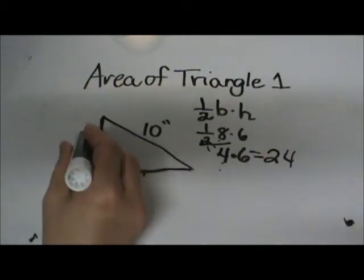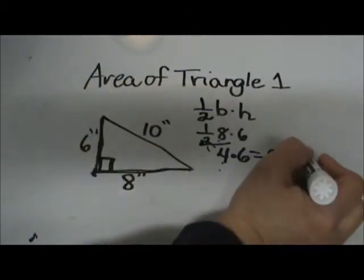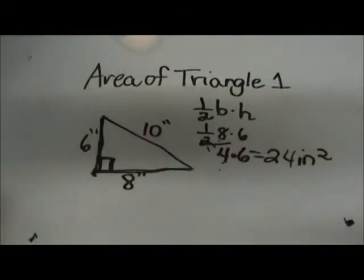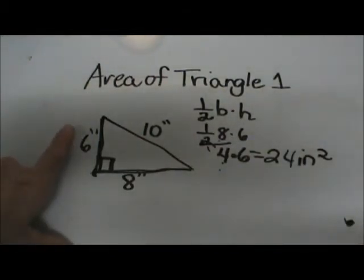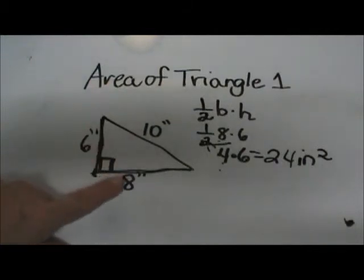Remember these are in inches, so area is two-dimensional, so it is inches squared. On a right triangle, the key is to multiply the two legs together and then take half of that product. I hope this video was helpful.